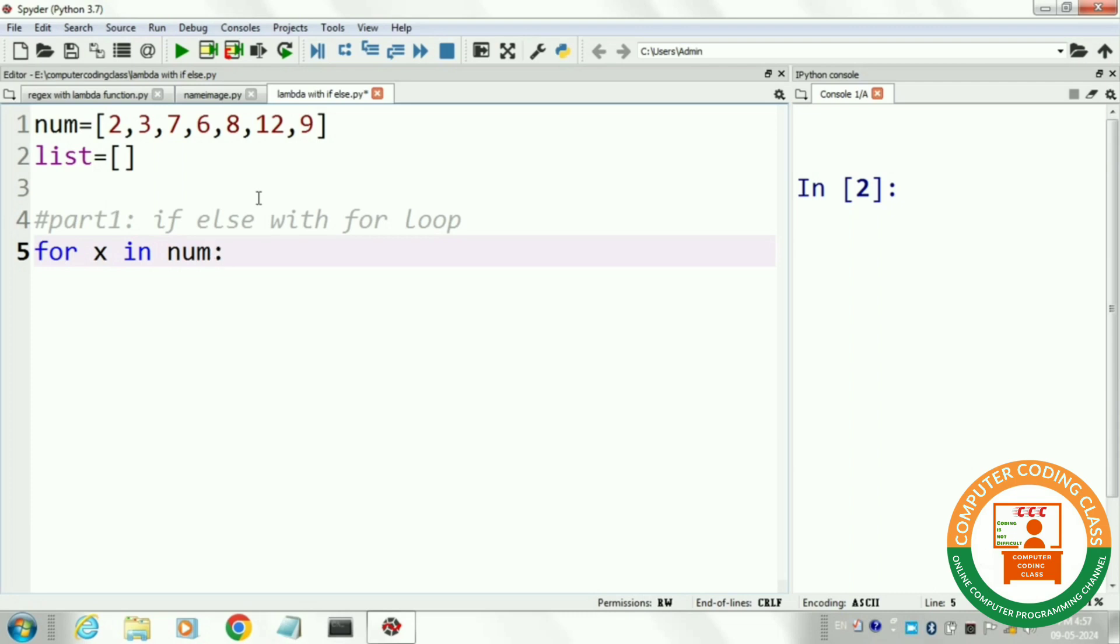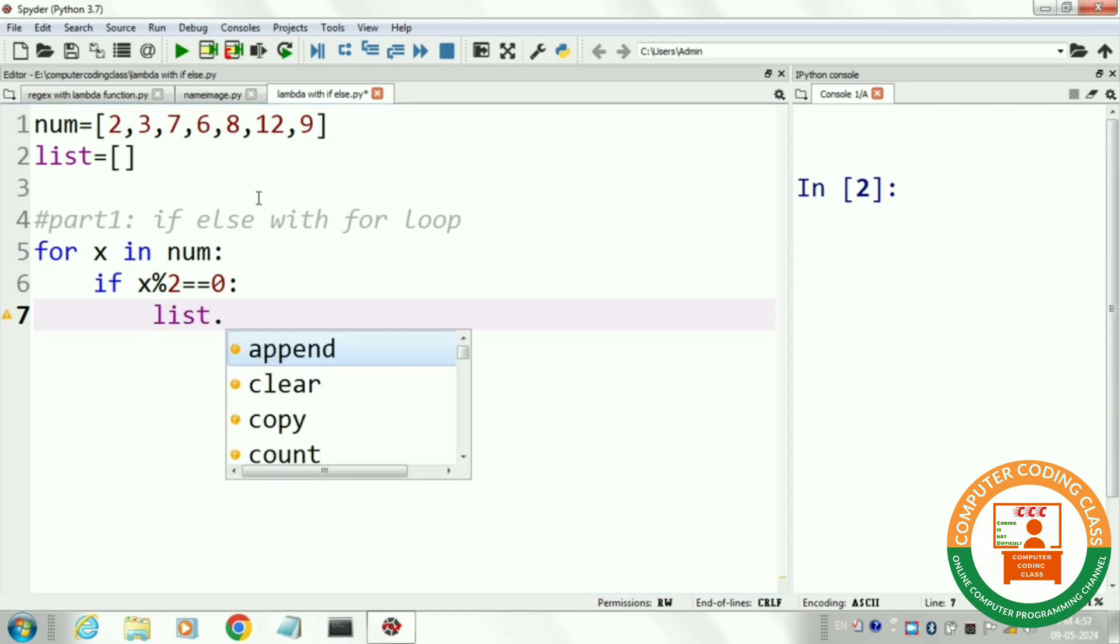Next, we will apply if-condition where we divide x with 2 and if remainder is 0, then we will append that number in our empty list. Next, in if-block, we append this number as an even number.